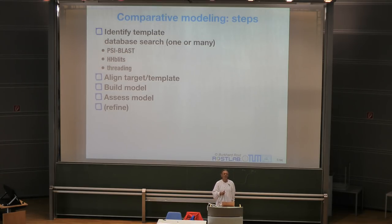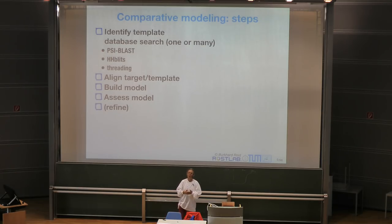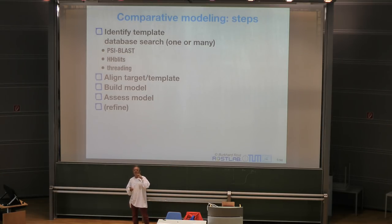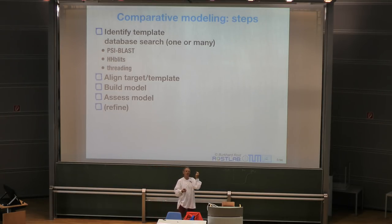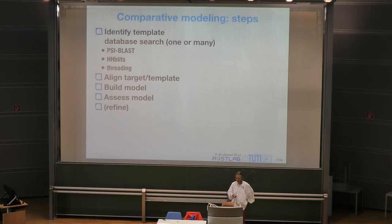Comparative modeling methods do these steps. Threading means that when you compare the two sequences, you also consider structural features. For instance, your alignment might imply that on a known three-dimensional structure, there would be two negatively charged residues next to each other — and you know this cannot quite be true, so you try to change that.